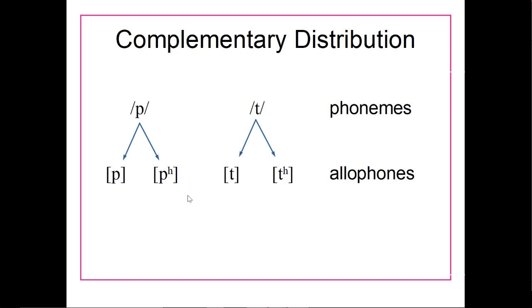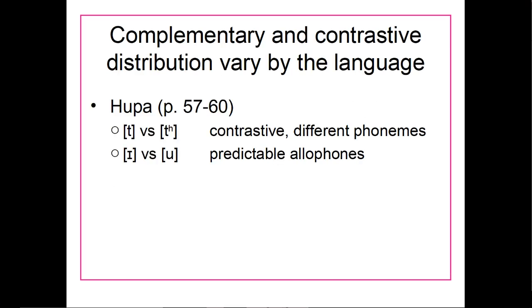A chart can represent that we have an underlying phoneme P or T, with allophones beneath it — an unaspirated P and aspirated P, or an unaspirated T and aspirated T. Complementary and contrastive distribution can vary by language, just as some languages may have a natural class that another language lacks.